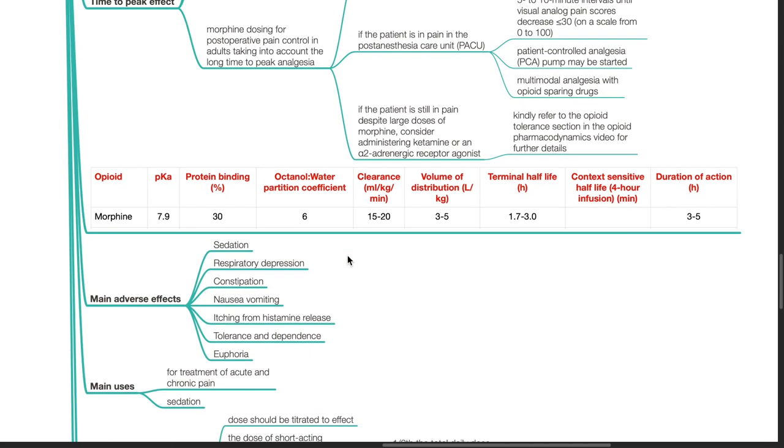Kindly refer to the opioid tolerance section in the opioid pharmacodynamics video for further details. Other PK parameters. PKA of morphine is 7.9, protein binding 30%, octanol water partition coefficient is 6, clearance of morphine is 15 to 20 mls per kg per minute, volume of distribution 3 to 5 liters per kg, terminal half-life and duration of action has been mentioned.